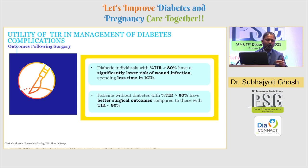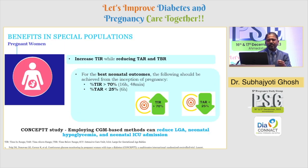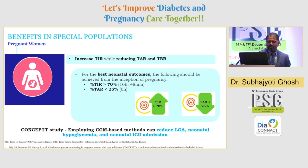We know that for diabetic patients in pregnancy, post-pregnancy there are chances of wound infection and secondary infection — these can be really reduced by using CGM for our patients. The benefits for pregnant women: patients with time-in-range more than 70% have better pregnancy outcomes, including neonatal care, as taken from the CONCEPT study. It showed reduced LGA, neonatal hypoglycemia, and neonatal ICU admissions.